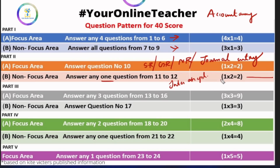If you have any questions about the Reconstitution of Partnership — Binding Up, joining a partner — you will need two questions. You will need an essential profit, interest on capital, and interest on drawings.